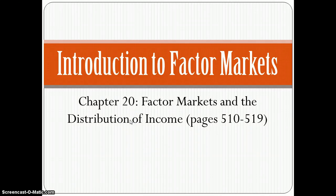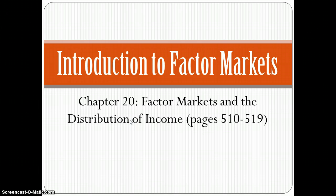Welcome back folks. Today we're going to begin our look at factor markets, and more specifically we'll look at what factors of production are. We'll be able to describe how the price of these different factors determines the demand for those factors, and we'll figure out how to calculate the profit-maximizing level of factors, particularly in the labor market. The information is in chapter 20 of your book, Factor Markets and the Distribution of Income, covering pages 510 to 519.